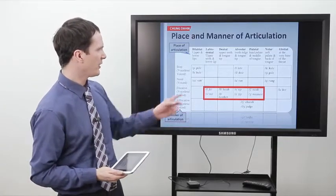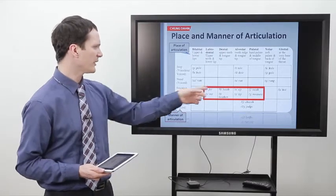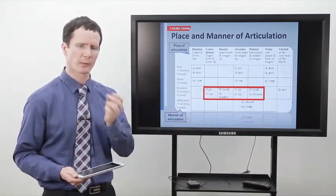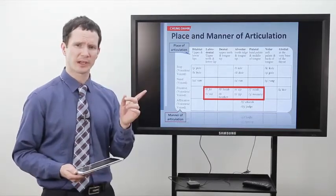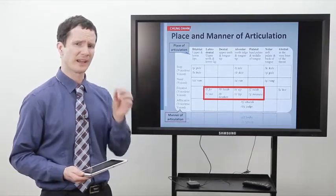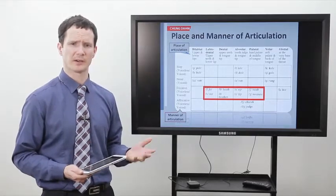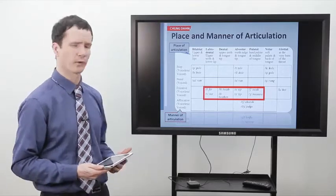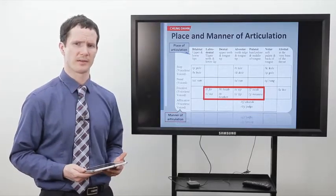The next sound we're interested in is a dental sound. Dental is also fricative — the air is coming out and we're causing friction. The difference from labiodental is that rather than lip and teeth, we want just the teeth. We take our tongue and put it between our teeth. The voiceless version of that sound is TH, and the voiced version, with the rumbling of the throat, is the voiced TH.